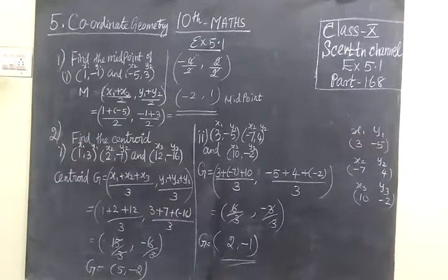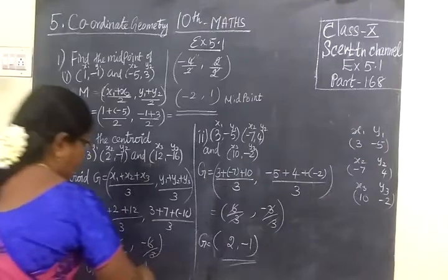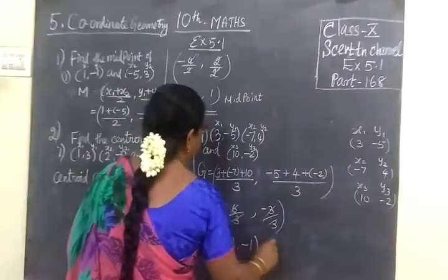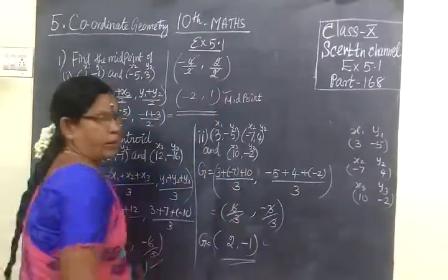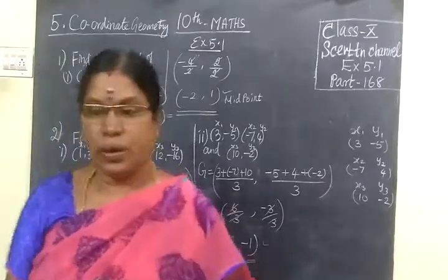For the first question, answer is minus 2, 1. Then for the second one, 2, minus 1. Then for the previous one, 5, minus 2. So all these answers are correct. This comes standard. Two more questions. Thank you.